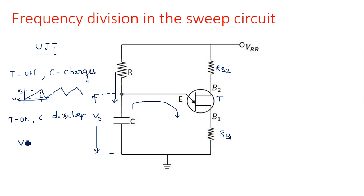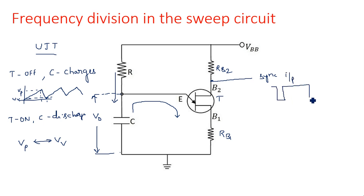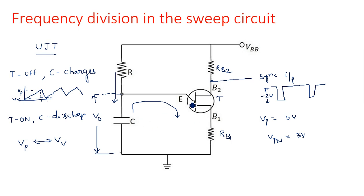In our case with sync pulses, we apply a negative-going sync input at base 2 of the UJT. Because of this negative pulse, the firing or peak voltage of the transistor comes down. For example, if the sync pulse amplitude is minus 2 volts and the original peak voltage Vp is 5 volts, then after applying the negative pulse the new peak voltage Vpn becomes 3 volts. So now the capacitor only needs to charge up to 3 volts instead of 5 volts to turn the transistor on.